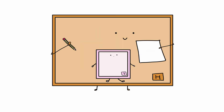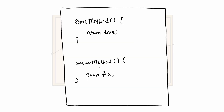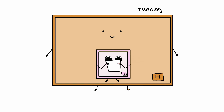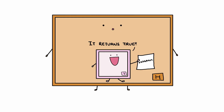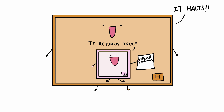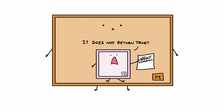If T said that the program did not return true, we take the program back and change it. For every return true statement, we change it to return false, and for every return false statement, we change it to return true. By doing this and giving the modified program back to T, we know that when T says it returns true this time, the original program had actually returned false, and therefore the program halts. But if T says the modified program does not return true, then we know for sure that the program does not ever return and instead keeps running, which means it never halts.